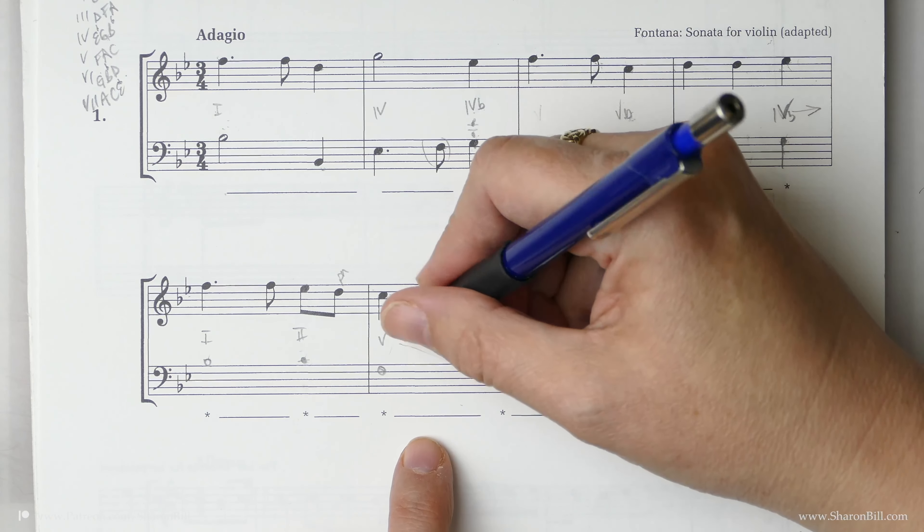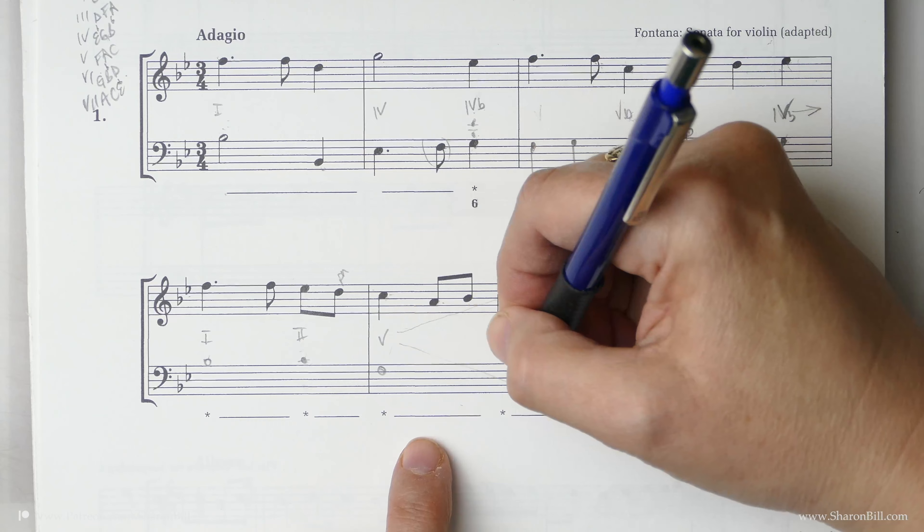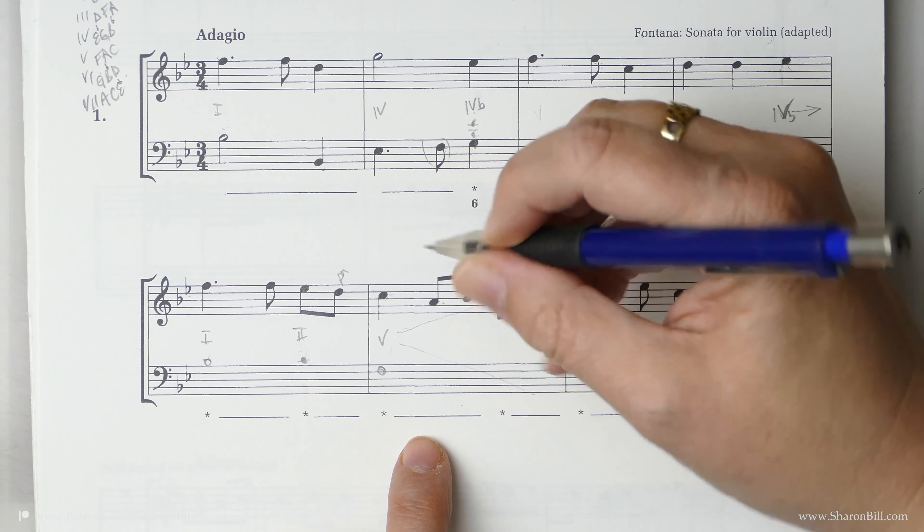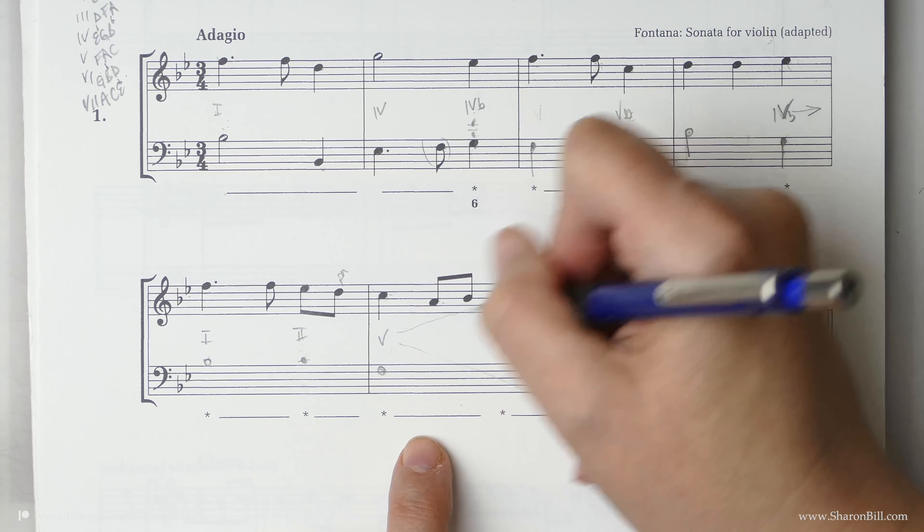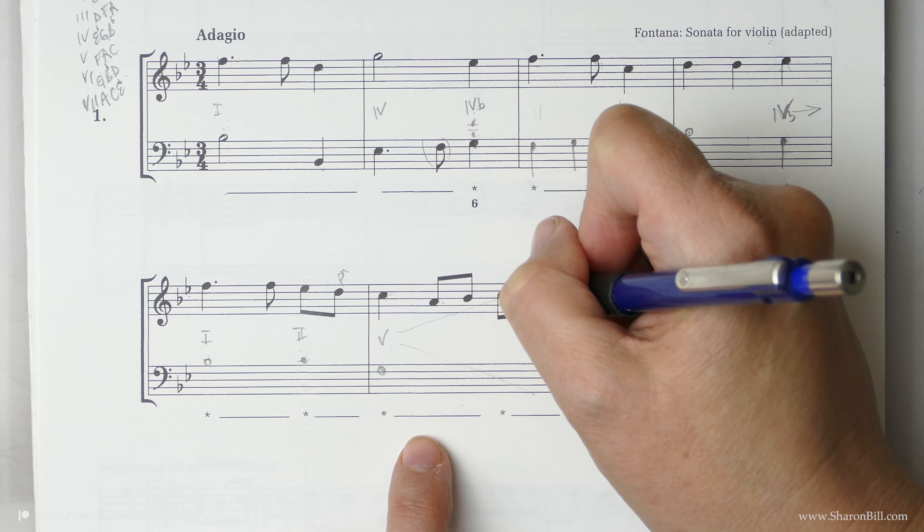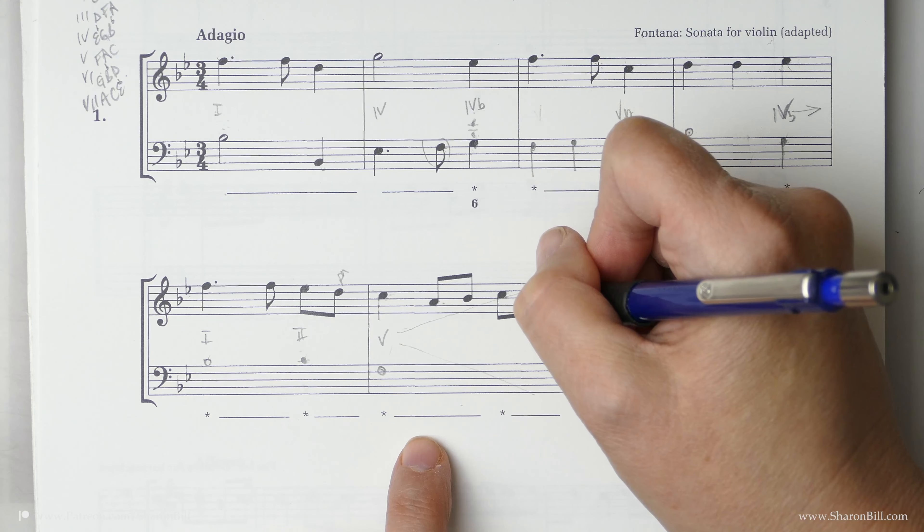Now what I want to try and achieve here is if we've got a nice little scale passage ascending it's nice to reflect that in contrary motion. Contrary motion has a very pleasing musical effect and it also gets rid of all sorts of problems as well so I think we'll aim for some contrary motion.